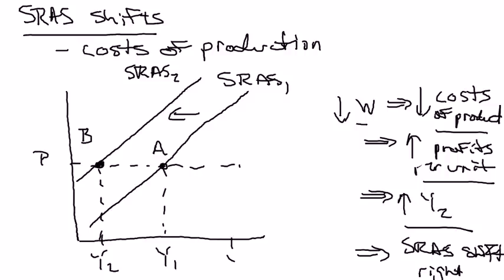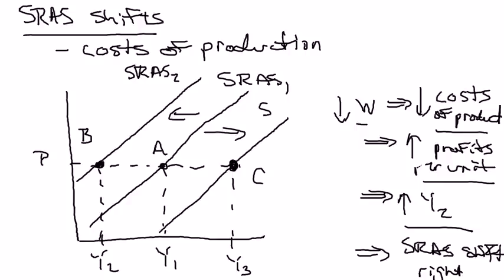How much more? Say, to Y3. That means the new price-output combination would be point C, which is not on the initial short-run aggregate supply curve, so there must be a new one going through it — short-run aggregate supply curve 3. There's nothing particularly special about nominal wages other than they're a major cost of production, and we'll come back to this when we talk about how the economy self-corrects and why there's a tendency for the economy to move to long-run equilibrium.